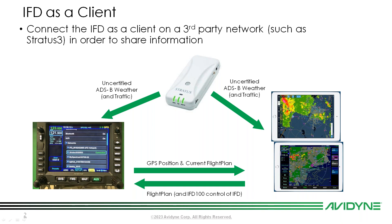You can also get ADS-B weather and traffic onto the IFD itself — that's optional and I'll show you how in this video. For the sake of just getting everything on the same network for flight plan transfers and traffic and weather on the iPad, setting up the Stratus to send traffic and weather to the IFD is not necessary. This is how the system looks in a nutshell — how everything talks to each other.